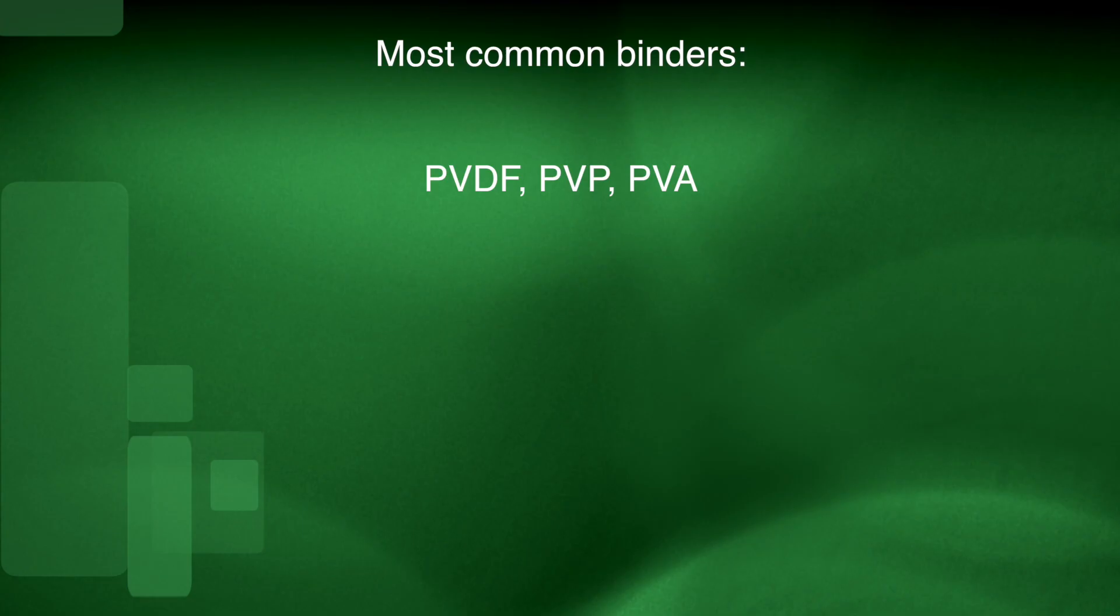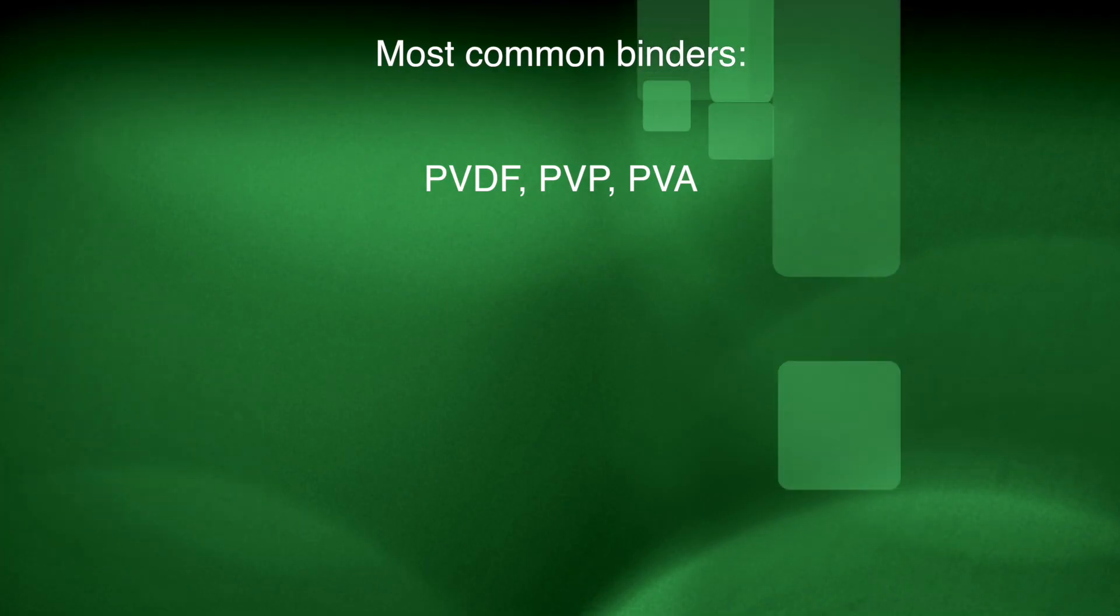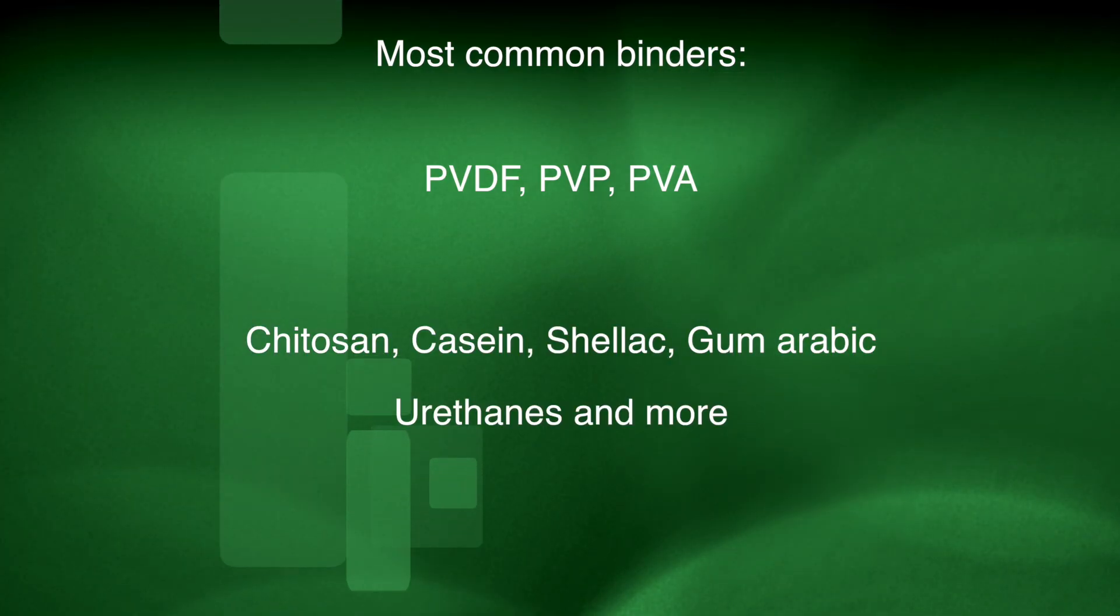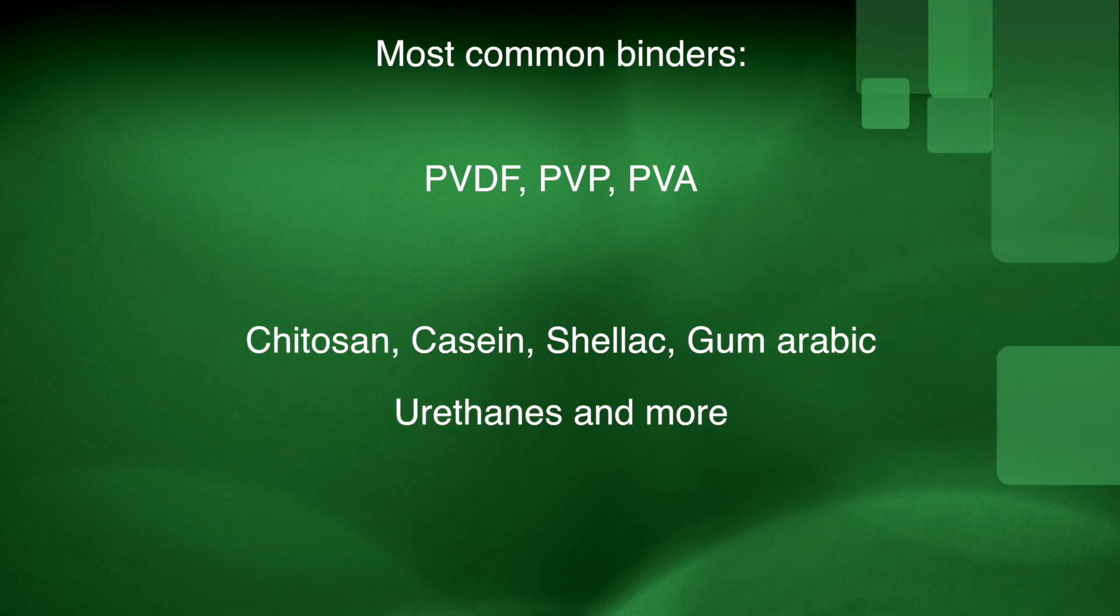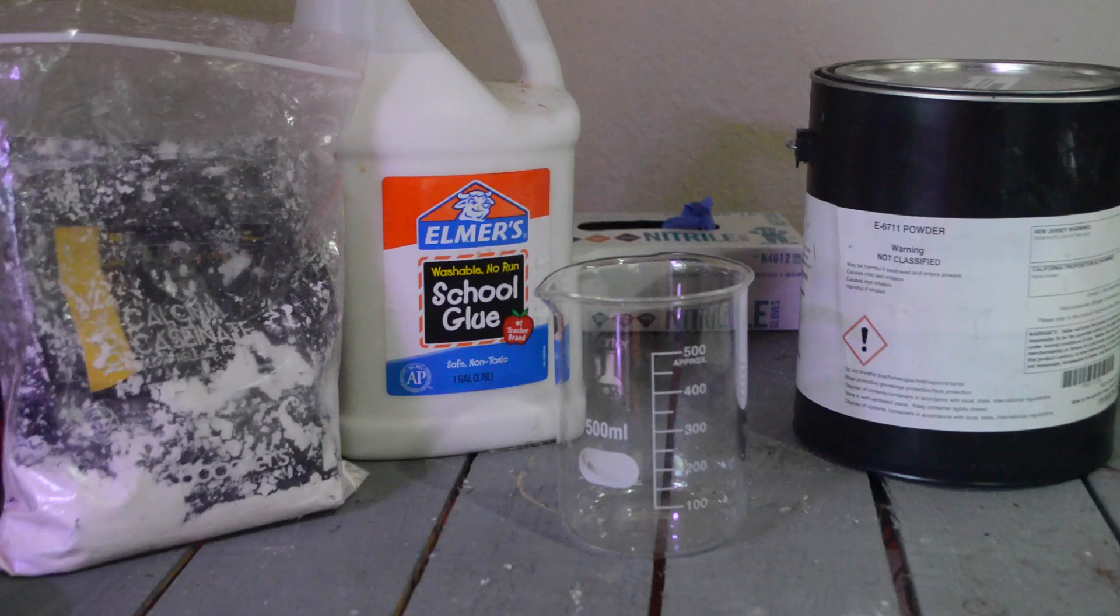The most common binders are PVDF, PVP, and PVA, though there's a huge selection of alternatives like chitosan, casein, shellac, urethanes, and more. For this video we'll be using casein, which is a protein from milk, and some white glue also known as polyvinyl acetate.